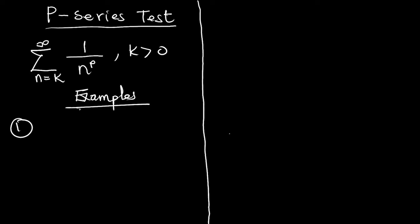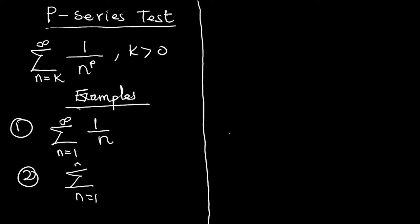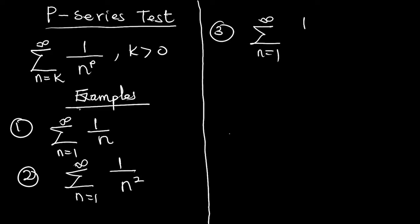Example one: the summation as n starts from one to infinity of 1 over n is an example of a P-series. Example two is 1 over n squared. Example three is 1 over the square root of n. P-series can also be written in other forms.